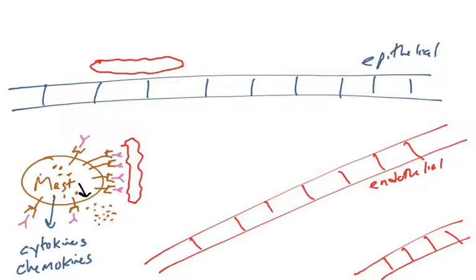So mast cells can degranulate, releasing these granules which have histamine, TNF alpha, and proteases. Mast cells will also turn on genes and make proteins that will also induce immune responses. There's the immediate response of degranulation which happens within minutes of recognizing an infection. There's a later response which takes hours which will make proteins, and those proteins get released also triggering inflammation and immune responses.